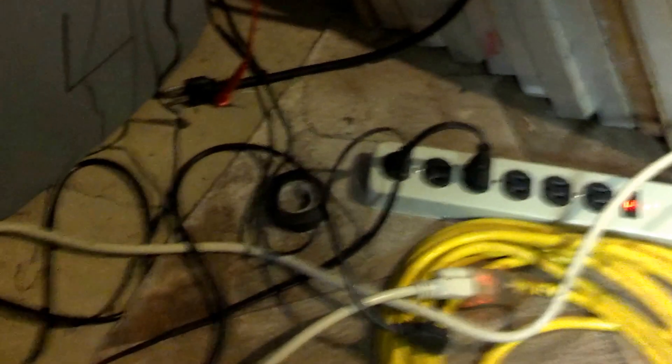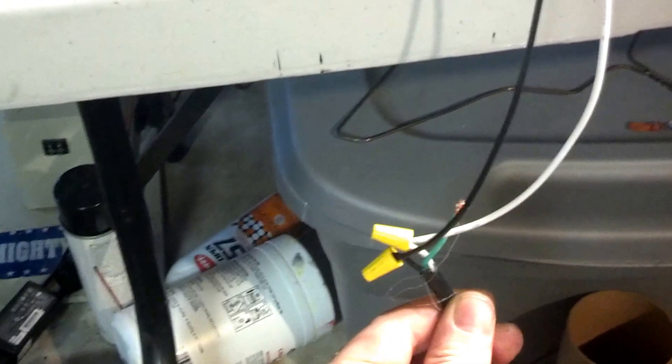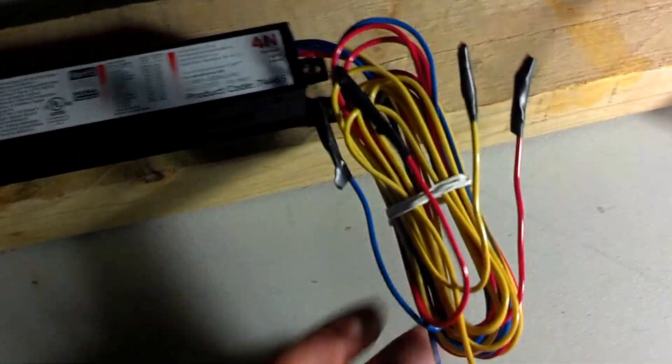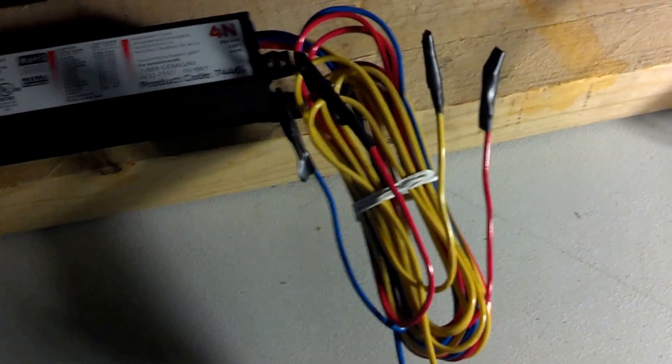It goes down, plugs into the power strip, comes up, two wires into the fluorescent light ballast. Got a variety of wires coming out to light more than one light. I just used two.